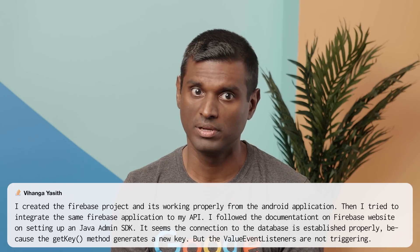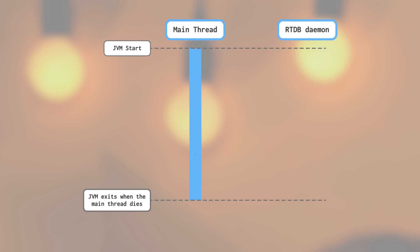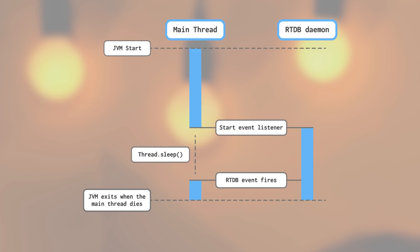This is actually one of the fundamental differences in the way an Android app would work versus how a regular Java application runs in the JVM. The JVM comes up, starts the application's main thread, does some operations, and when the main thread exits, the whole JVM exits — provided it hasn't spawned any other threads. So if you start your application, call initialize app, start a database connection, and start a listener, you think you're waiting for events to fire, but what's actually happening is the main thread exits and takes the whole JVM down. Before any real-time events can be delivered from Firebase backend to your application, your whole program exits. So what you have to do is tell your application to register the event listener and wait for things to happen.